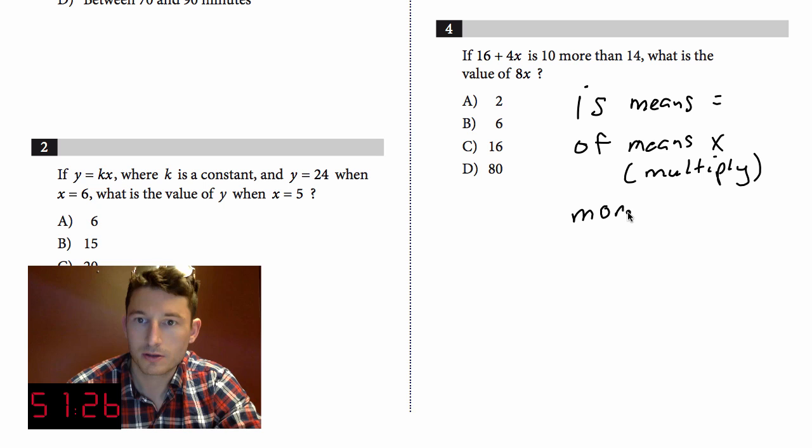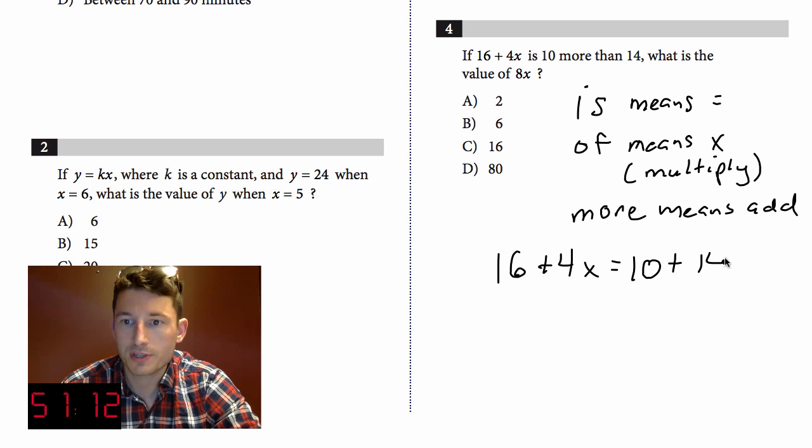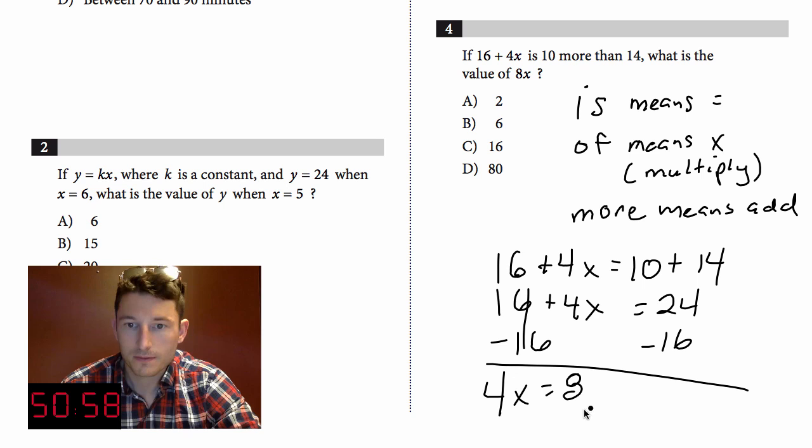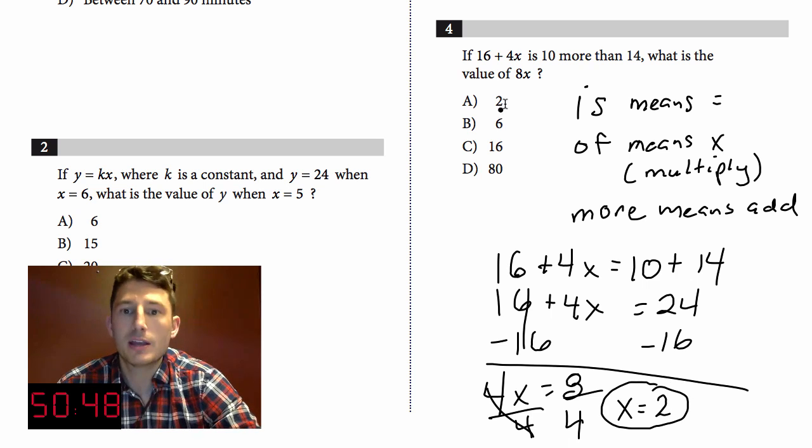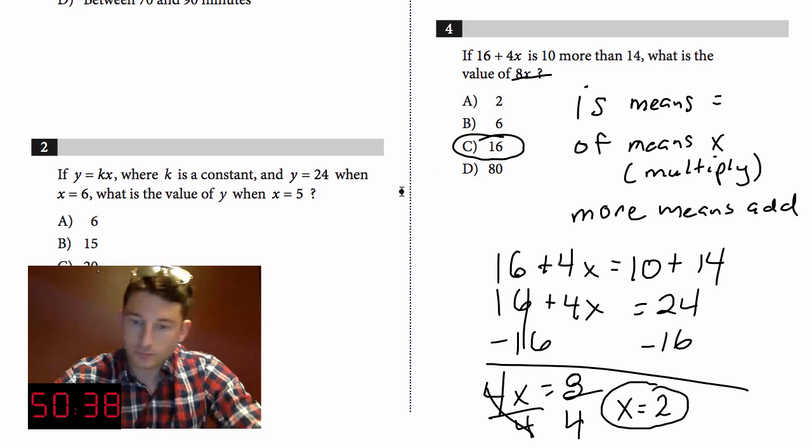Let's translate left to right: 16 plus 4x is 10 more than 14. We simplify, that equals 24. Minus 16 from both sides, we get 4x equals 8. Divide by 4, so x equals 2. Now don't get tricked here because you know, 'oh I got 2, I'm done.' That's how you get stuff wrong on the SAT. Always look at what you're trying to answer. Actually let's underline it: 8x. So x is 2, 8x is 16 and you're done.